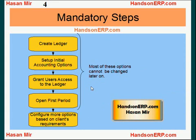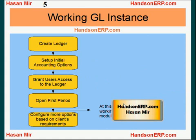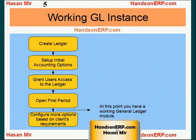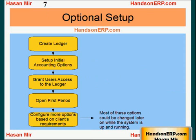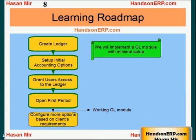Most of the time is spent on these first four steps while implementing the general ledger module. After completing them you will have a working general ledger module — you can enter data and start using it. At the end you can set up more options based on the client's requirements. Most of these additional options can be changed later while the system is up and running, so they are not as critical as the first four boxes.